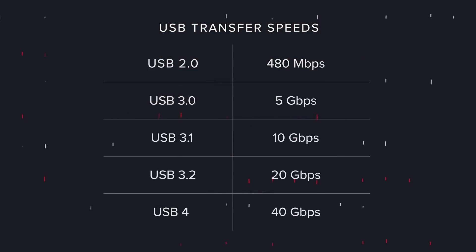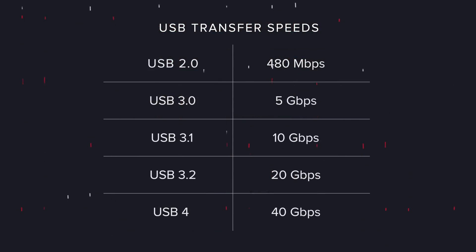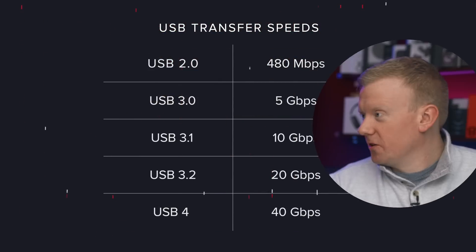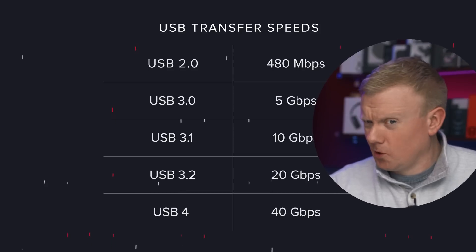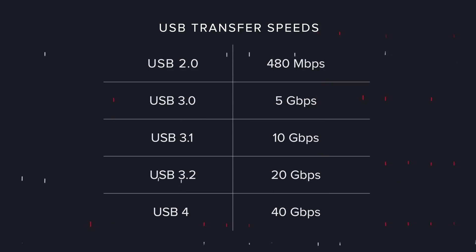USB 2 came out in 2000 at 480 megabits per second. And USB 4, also known as Thunderbolt 3 and Thunderbolt 4, came out in 2019 and it's 40 gigabits per second.